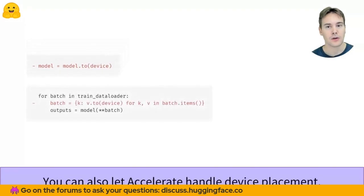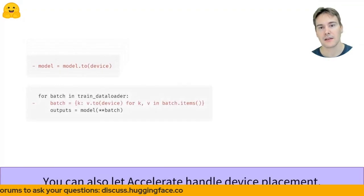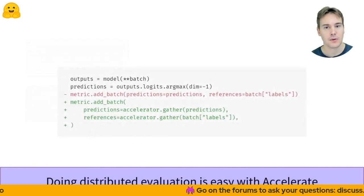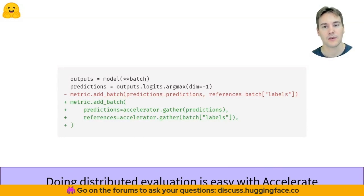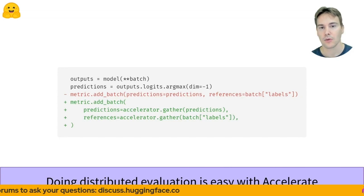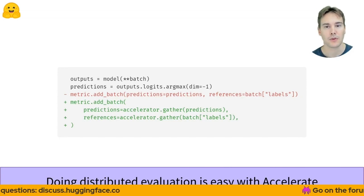Using Accelerate also allows you to get rid of the device placement lines as the library will automatically handle that for you. It also makes it easy to implement distributed evaluations which we didn't even start showing in the previous examples. You just need to gather the prediction and labels across all GPUs when you want to use them to compute your metric.